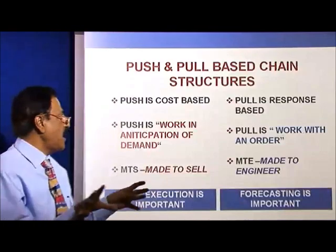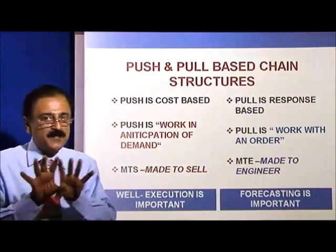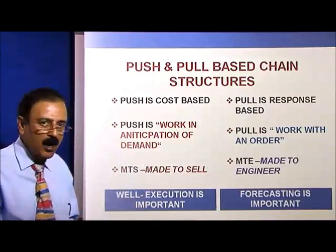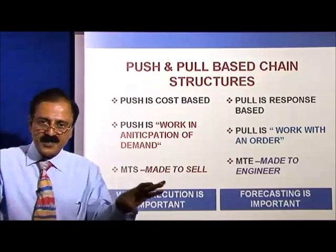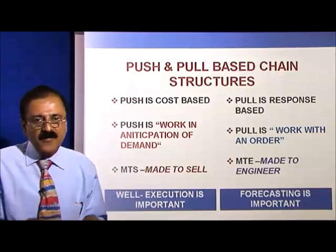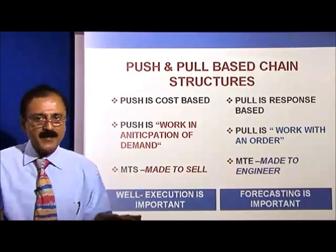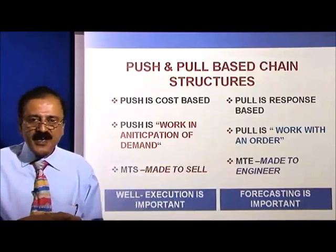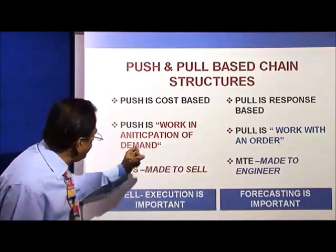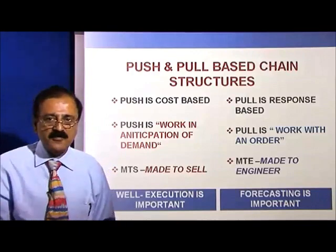Let us come to what is known as push and pull based chain structures. Push is a cost-based strategy; pull is a responsive-based strategy. Push works in anticipation of the demand — it is what we call made-to-sell. Forecasting is a very difficult technique, but because of the tools available, we are able to estimate anticipated demand and companies produce keeping this in mind. Pull, on the other hand, is a made-to-engineer or made-to-order product — products are designed and executed based on the needs and wants of the consumer.